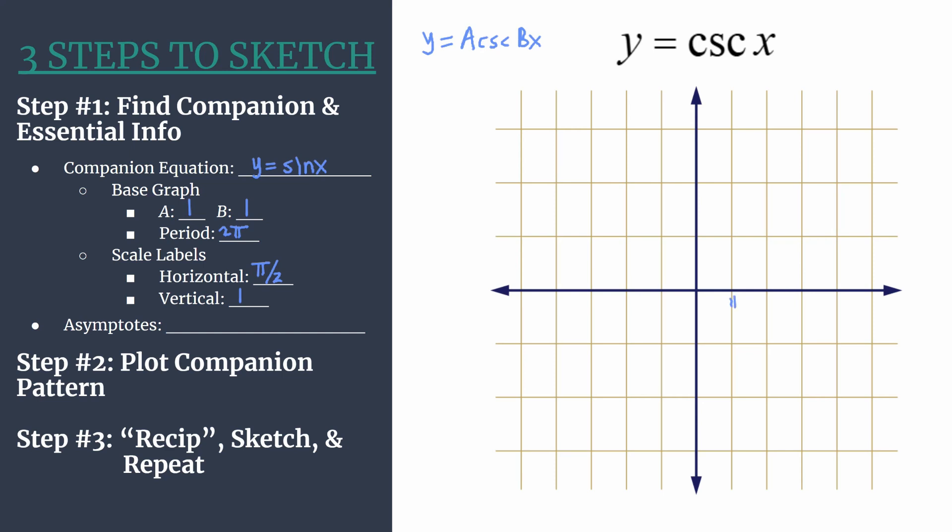Let's label our axes. Horizontally, we count 1 π over 2, 2π over 2 reduces to π, 3π over 2, 4π over 2 reduces to 2π, and 5π over 2. I'll pause and get the negative side labeled, same values just negative. Now we can label our vertical axis counting by 1s: 1, 2, 3, negative 1, negative 2, negative 3. Now we've got a really nice setup for step 2.